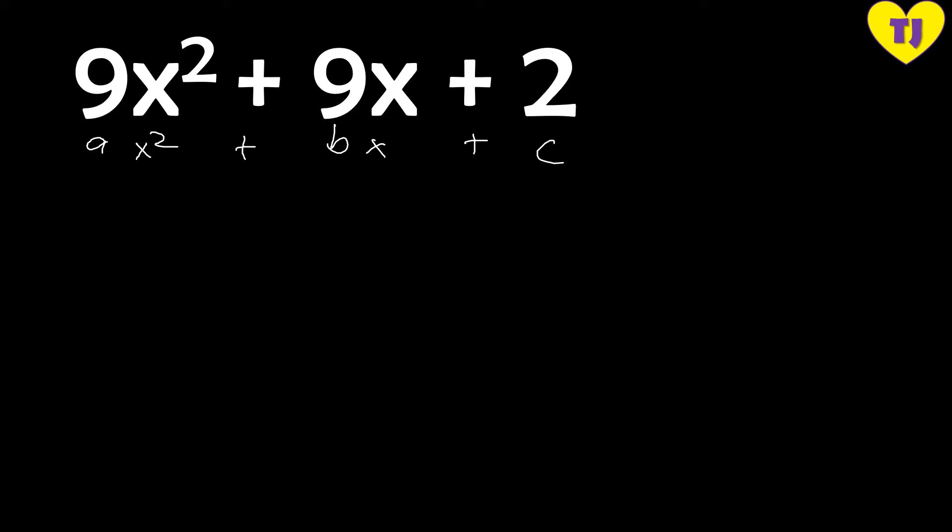I have a video on the usual factoring method — I'll place that link in the description. So when a is not equal to 1, we need to follow certain steps, and this is what we call the sliding method.